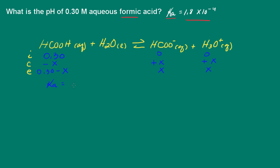So now I can set up my acid dissociation constant expression. And Ka is going to be equal to X times X divided by 0.3 minus X. And we can set that equal to 1.8 times 10 to the negative 4.